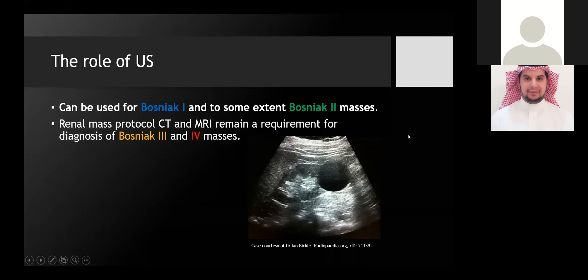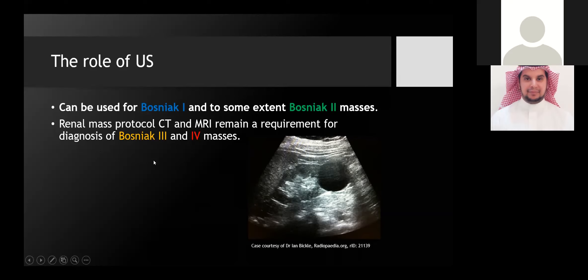Regarding the role of ultrasound: I was taught during residency that we should not use Bosniak in classifying cystic renal masses with ultrasound. However, the new classification allows its use up to Bosniak 2 in some extent. We can freely use Bosniak 1 if the lesion is completely anechoic with posterior acoustic enhancement and demonstrates no flow on color Doppler and no calcification. Still, renal masses should be further evaluated with CT and MRI to determine Bosniak 3 and 4.